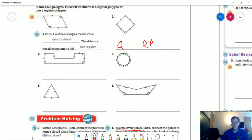Number four, I have one, two, three, four, five, six sides, so I have a hexagon. I have all the sides the same length and all of the angles the same length, so that is going to be a regular polygon.